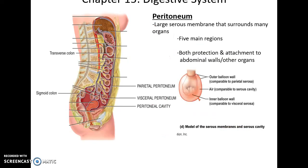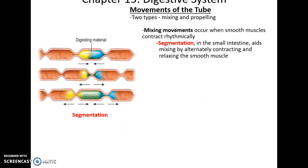The peritoneum is a large serous membrane with five main regions. It is important for protecting the various organs of the alimentary canal as they move and rub up against things, helping protect them from friction. It also acts as an attachment site, helping to attach structures to the abdominal walls and to other organs.